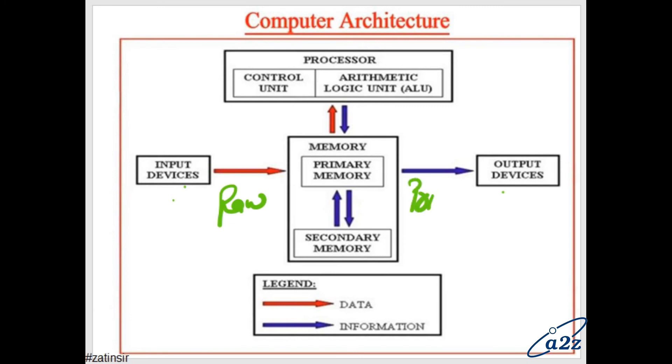Computer architecture: processor. Red means raw, blue means processed. Input device supplies the raw data. Raw data is stored in the memory, primary memory. It provides the raw data to the processor. Processor processes it and provide the processed data to the memory. In secondary memory we used to store the processed data, and on output device also we used to access the processed data. The processed data is called information. The raw data is called data.